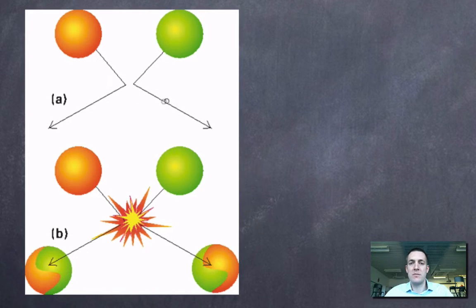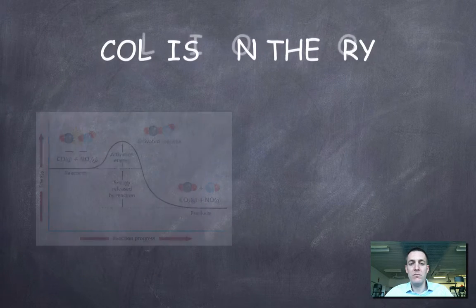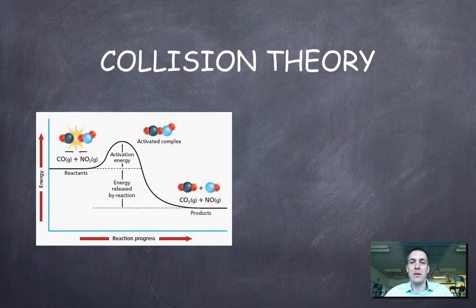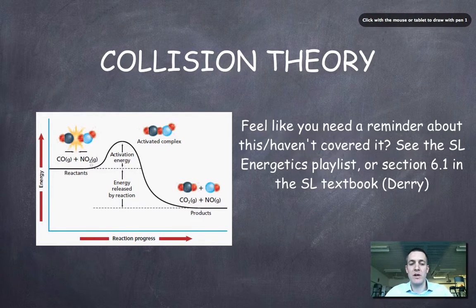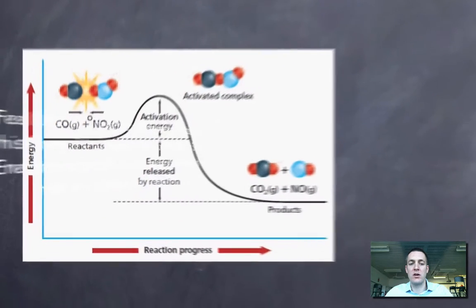Okay, so why is it that some collisions lead to reactions and some don't? Well, if we now think about energetics and try and link those ideas with rates of reaction, then we can maybe remember something about energy level diagrams. And here we've got some reactants, carbon monoxide and nitrogen dioxide.